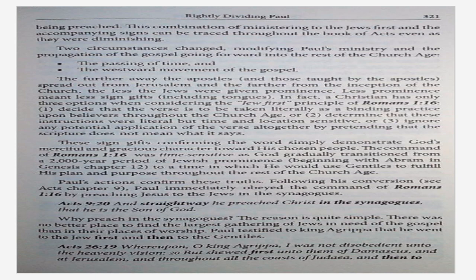In fact, a Christian has only three options when considering the Jew first principle of Romans 1:16. Number one: decide that the verse is to be taken literally as a binding practice upon believers throughout the church age. Or two: determine that these instructions were literal, but time and location sensitive. Or three: ignore any potential application of the verse altogether by pretending that the scripture does not mean what it says. These sign gifts confirming the words simply demonstrate God's merciful and gracious character toward his chosen people. The command of Romans 1:16 was time sensitive as God gradually transitioned from a 2,000 year period of Jewish prominence, beginning with Abram in Genesis chapter 12, to a time in which he would use Gentiles to fulfill his plan and purpose throughout the rest of the church age. Paul's actions confirm these truths.